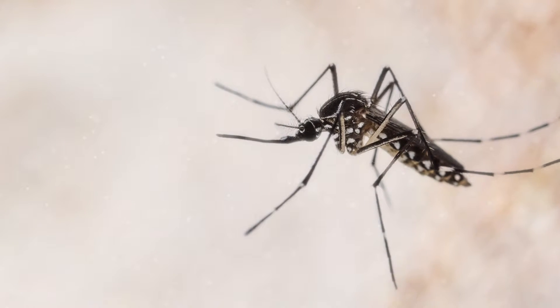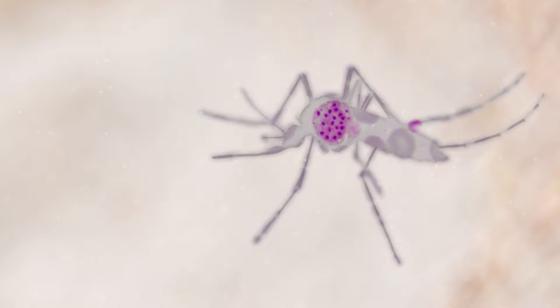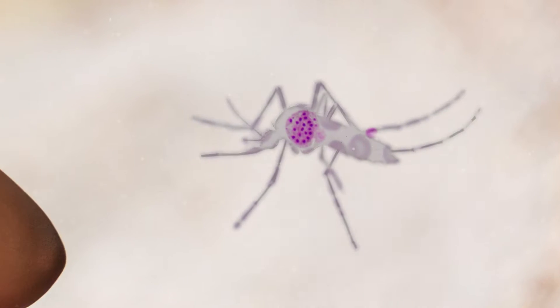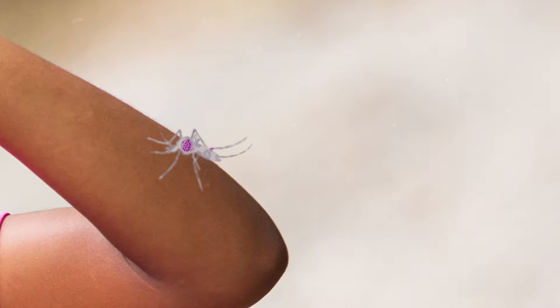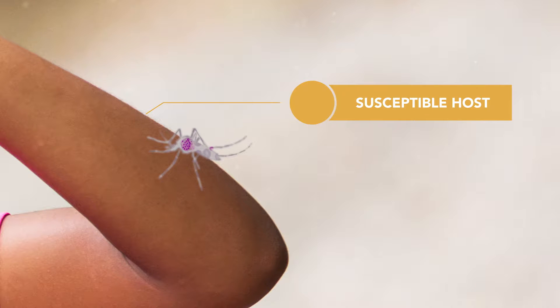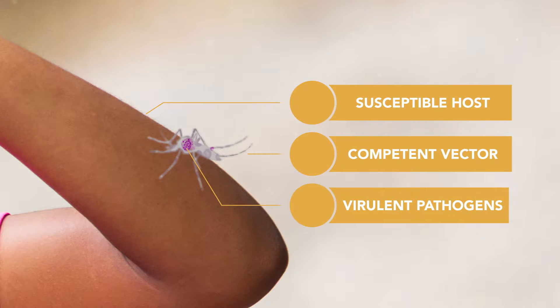Vector-borne diseases are caused by pathogens such as bacteria or viruses that are often transmitted by insect vectors such as ticks or mosquitoes. These diseases are interesting to study because they require a cycle of pathogen-host interaction that leads to human infection. Successful infection requires the presence of a susceptible host, a competent vector, and virulent pathogens interacting in an appropriate environment.